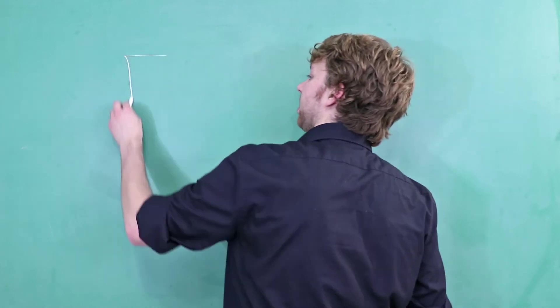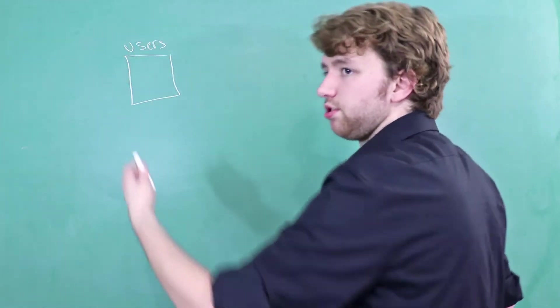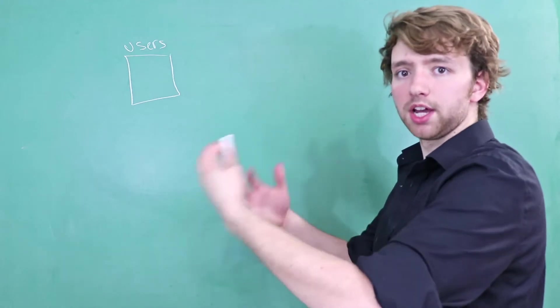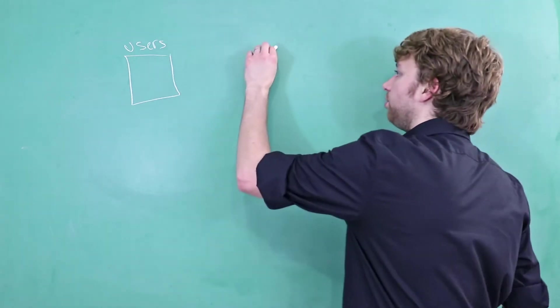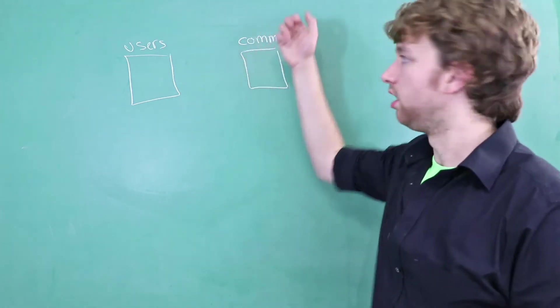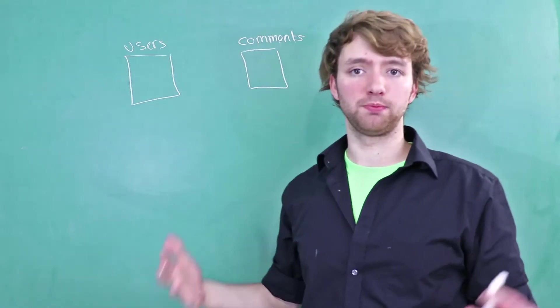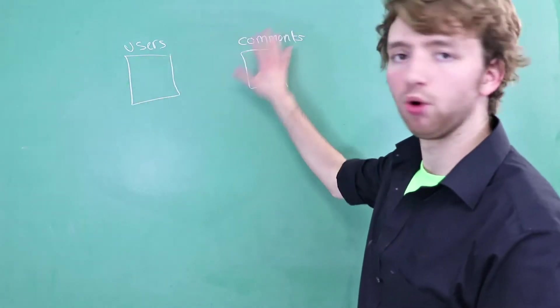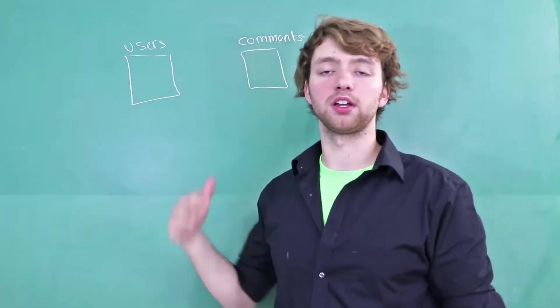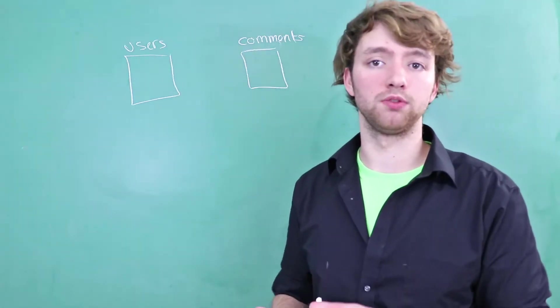So for example, if we have a users table and let's say these users can post comments on some kind of shopping website or something, well then we might have a comments table. We need a way to associate who posted the comment, and that is where the relationship comes in. That is a more advanced relationship and that's what we'll be talking about in the next two videos, but let's start now with just the one-to-one relationship.